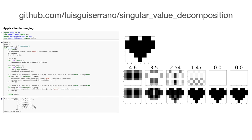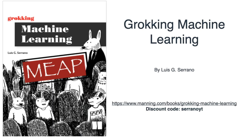Before we start, some announcements. This video has some code attached and it's in my GitHub repo. I encourage you to take a look at it and play with the code — it's for the application at the very end. The GitHub is Luis Serrano and the repo is called singular value decomposition. It's linked in the comments. I'd also like to announce that I have a book called Grokking Machine Learning — there's a link and a discount code in the comments.